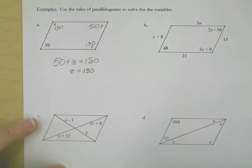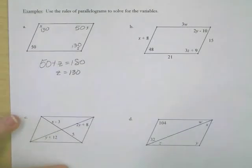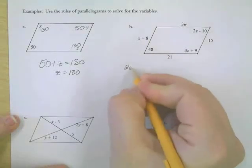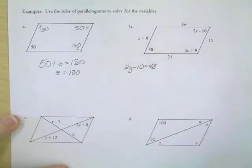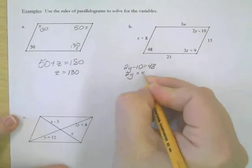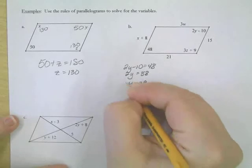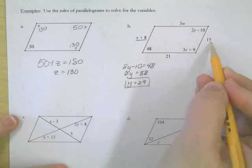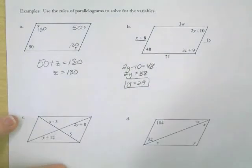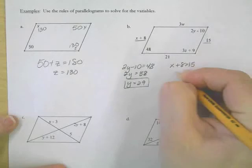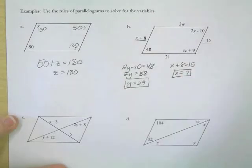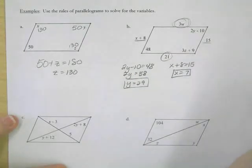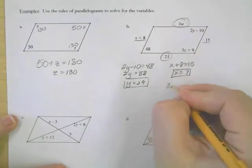For B, I'm going to look at the first thing across from each other. My first equation can be 2Y minus 10 equals 48. So 2Y equals 58, so Y is 29. For the X equation, X plus 8 is opposite 15. Opposite sides are equal, so that equation is going to be X plus 8 equals 15, so X equals 7. 3W is opposite 21, so 3W equals 21, so W equals 7.